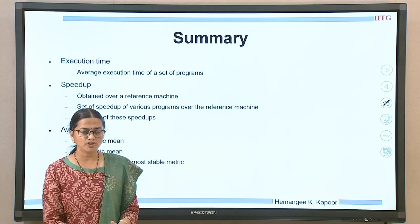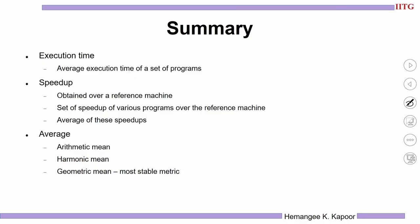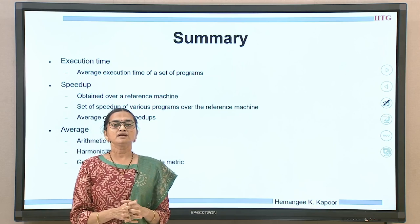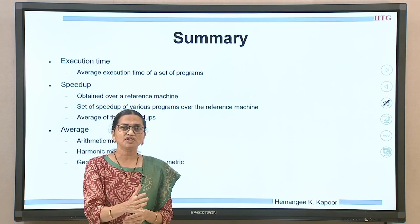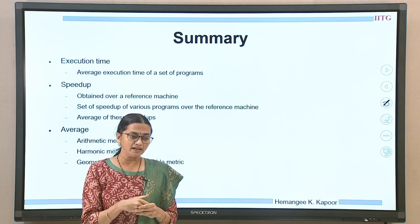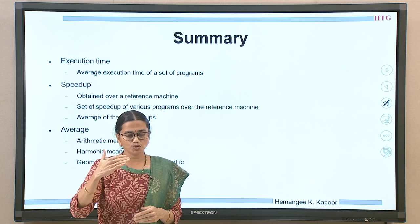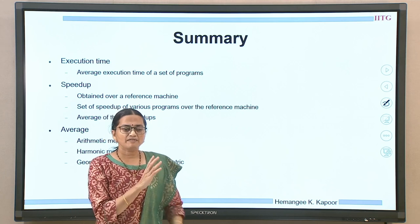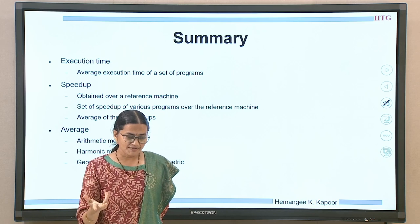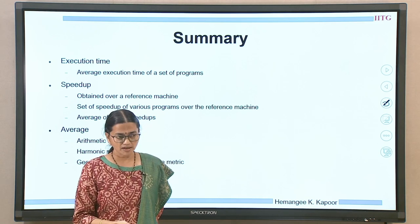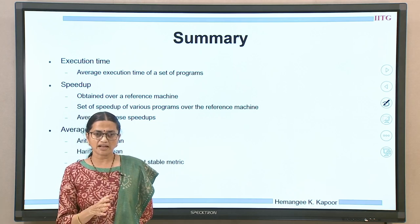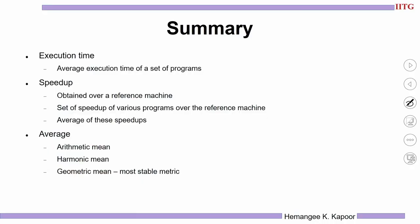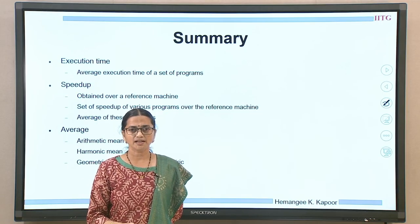To summarize this lecture: we used execution time to report results, and when we have several execution times, we average them using arithmetic, harmonic, or geometric mean. Speedup is always reported in comparison with a reference machine — take the ratio of reference execution time to your machine's execution time, then average across programs. The conclusion is that harmonic and arithmetic means are usable, but geometric mean is the more stable metric, giving consistent results across different reference machines. Thank you.